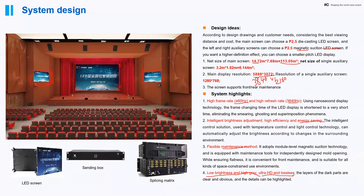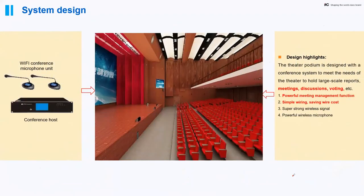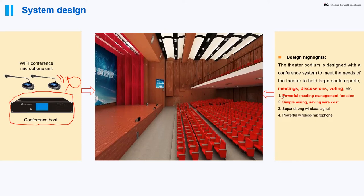We can also apply a digital conference system in the theater auditorium. The connection is very simple: it's a wireless Wi-Fi conference. We just need one conference host, and with an extra access point all the wireless microphones connect to the AP. People on stage or in the audience can use the microphones to have a discussion. This design features very powerful meeting management functions, simple wiring, super-strong wireless signal, and a powerful wireless microphone.